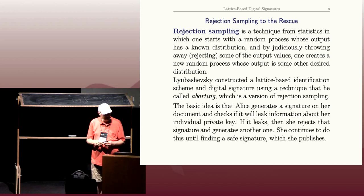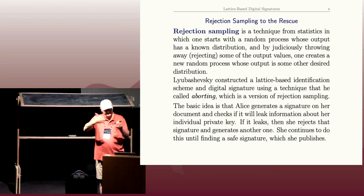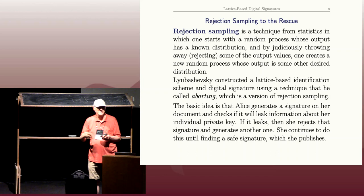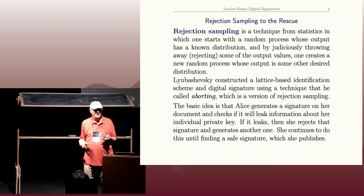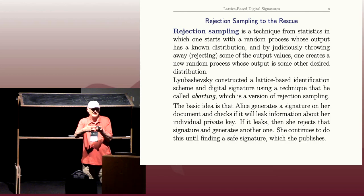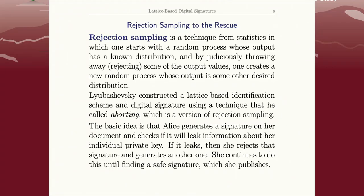She called it aborting because you kind of stop the signature process and start it again, but I'll call it rejection sampling, which is the statistics term. So the idea is Alice generates the signature, checks if it's a signature she wants to release. If it is, she uses it. If it's not, she rejects it herself and goes back and generates a new signature. She keeps doing this, hopefully not too many times, until she finds a signature that she wants to publish.